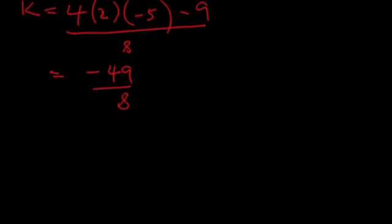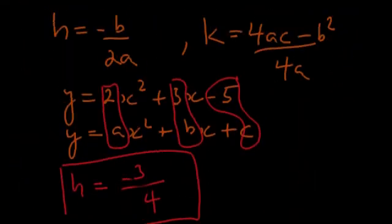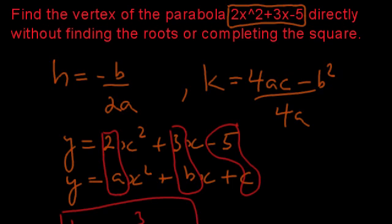And voila, our h and k values give us the vertex coordinates: (-3/4, -49/8). There we go, a very simple and quick method to find the vertex without having to complete the square or find the roots first.